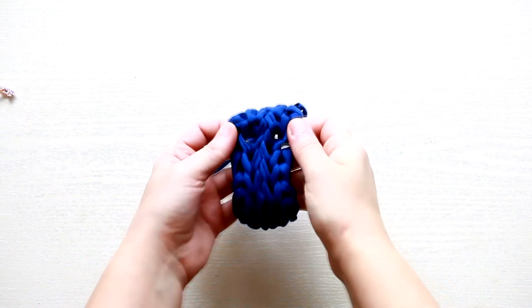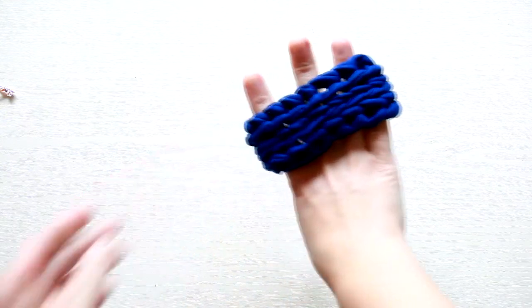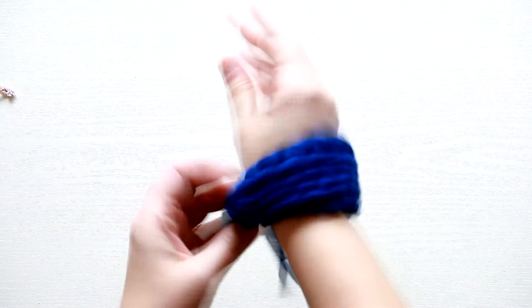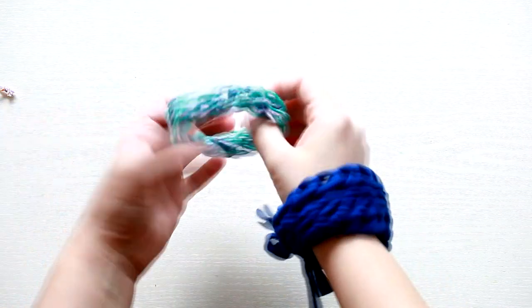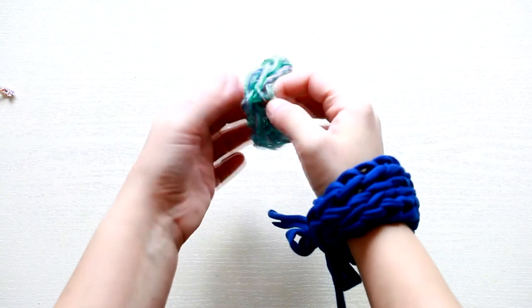I like using chunky yarn for finger knitting, but you can definitely use whatever type of yarn you have on hand. Different types of yarn gives you different effects. It's like a totally different pattern, as you can see in this example.